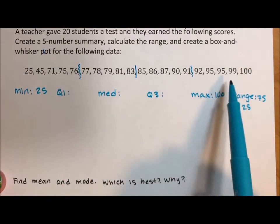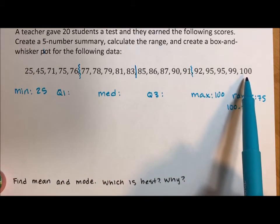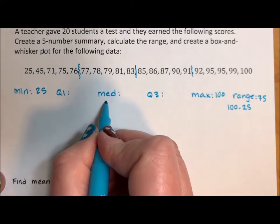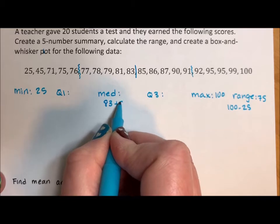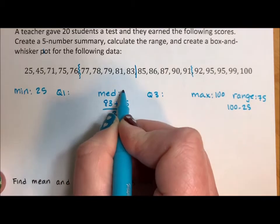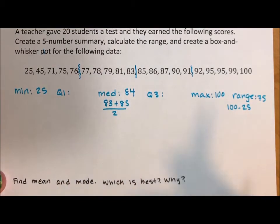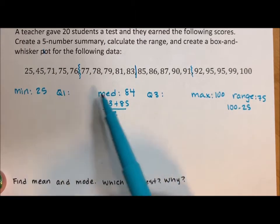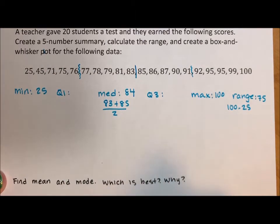Because there's an even number of test scores, the middle is not actually going to be a data point. To find the middle, we take 83 plus 85 and divide it in half, and we get 84. The only data points guaranteed to be actual data points are the minimum and maximum. Q1, median, and Q3, there's no guarantee it's going to actually be a data point.